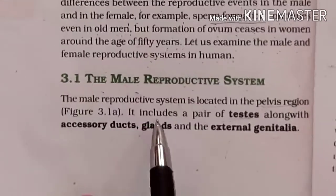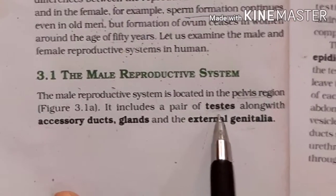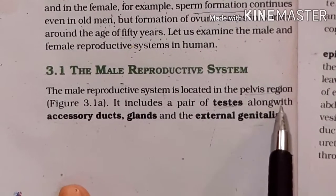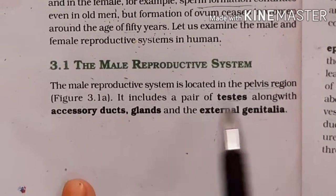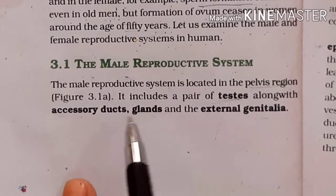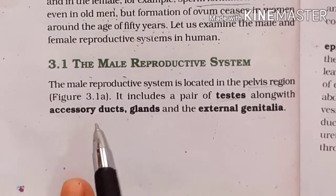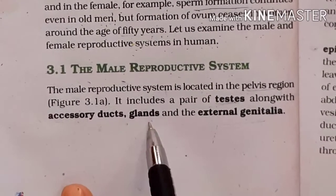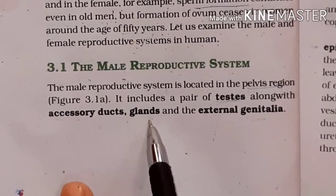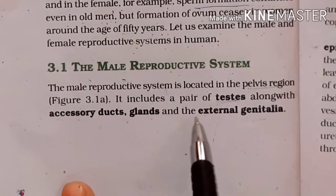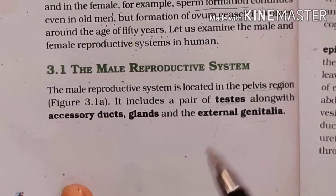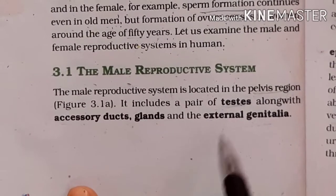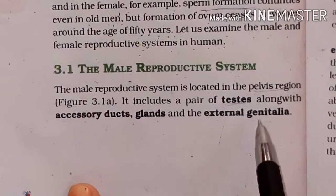The male reproductive system includes a pair of testes, along with accessory ducts and glands. Accessory ducts are tube-like structures, and glands secrete substances. It also includes the external genitalia.